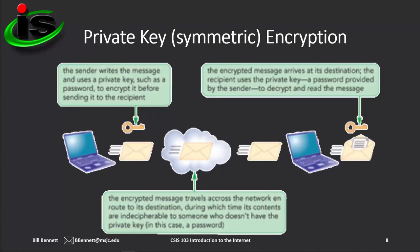This graphic illustrates how private key encryption works. The sender writes an email message and uses a command in the email app to encrypt the message with a private key, such as a password. When the recipient receives the email message, his or her email app uses the same private key to decrypt the message. During transit, the message is protected because it is encrypted. Private key encryption works well in a highly controlled environment in which the sender and the receiver both have the private key installed.